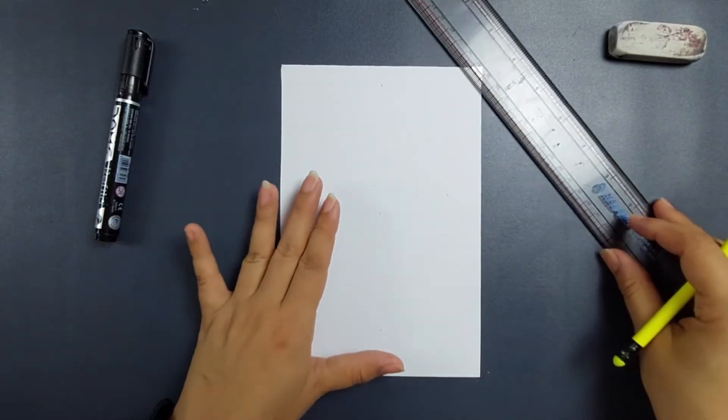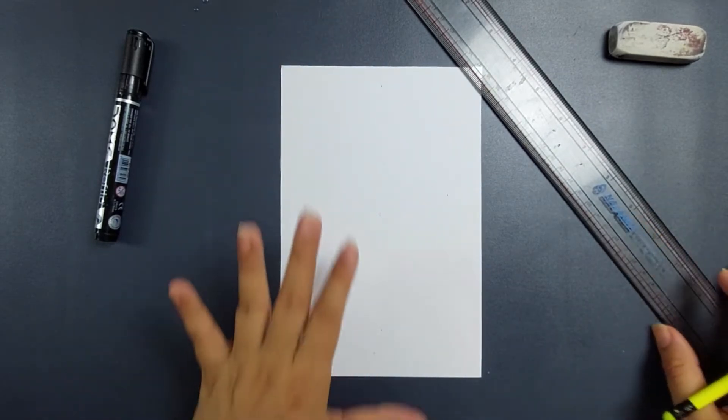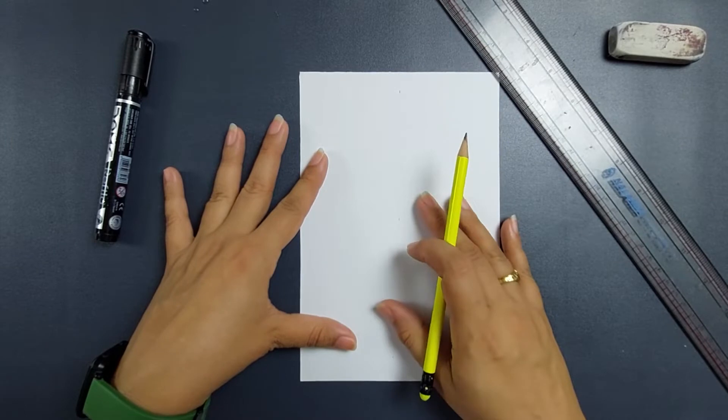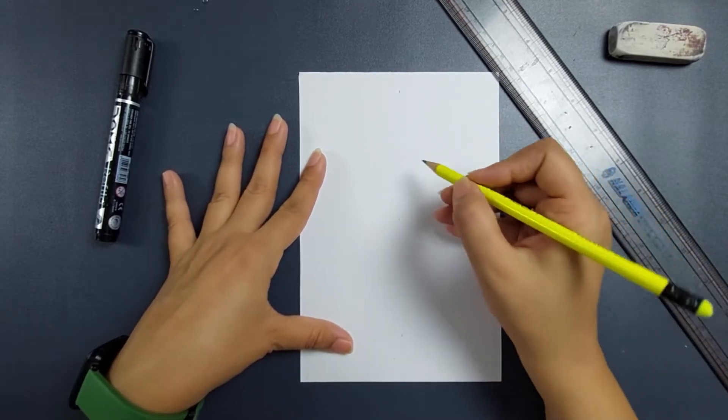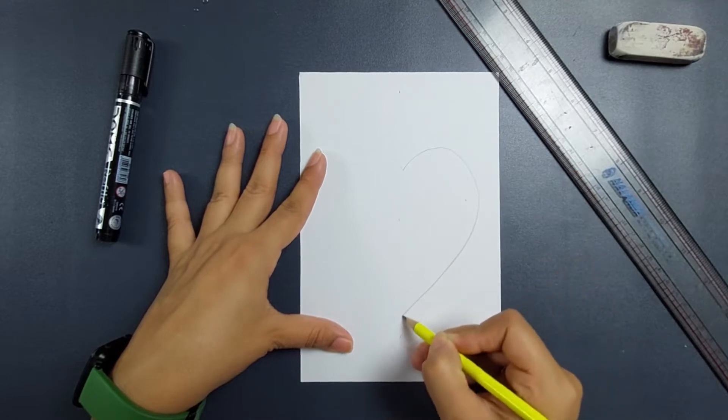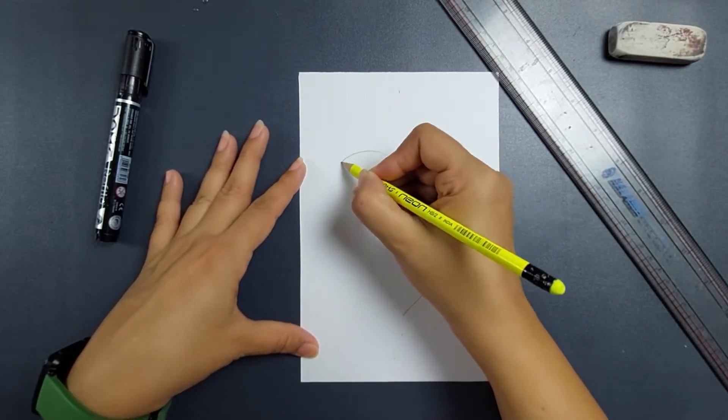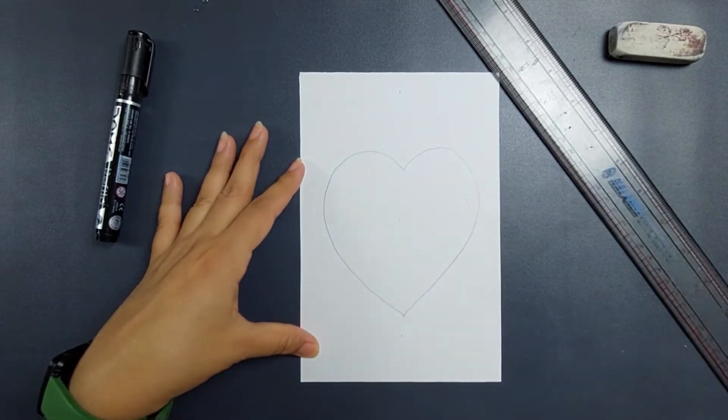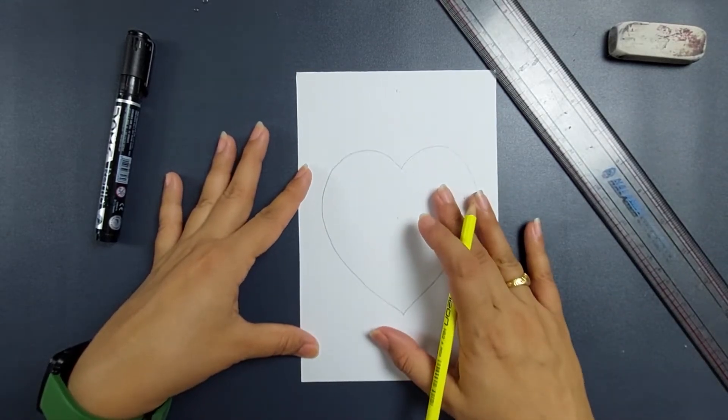The first step is we have to just make a center of the sheet, just for your idea, and create a heart. The first step is we will be making a heart on the paper exactly in the center of your sheet. So I have created a heart with pencil.